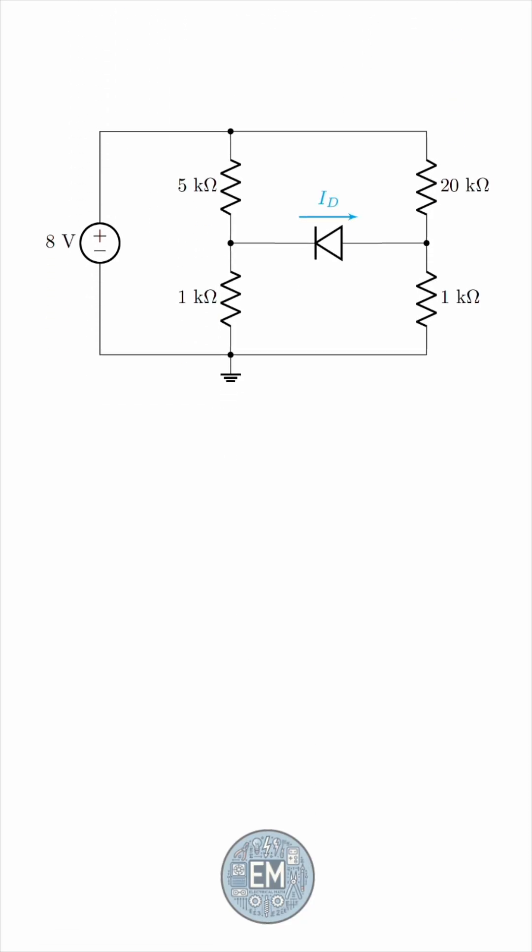First of all, isn't this current just zero? It's labeled in the opposite direction to what it would have been if the diode was actually conducting, right?